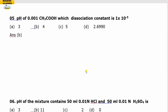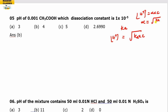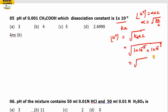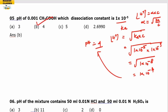Next: the pH of 0.001 M weak acid where the dissociation constant Ka is given. When Ka is given, H⁺ ion concentration = √(Ka × C). Ka = 1×10⁻⁵ and C = 1×10⁻³, so Ka × C = 1×10⁻⁸. Taking the square root gives H⁺ = 1×10⁻⁴. Therefore pH = 4.